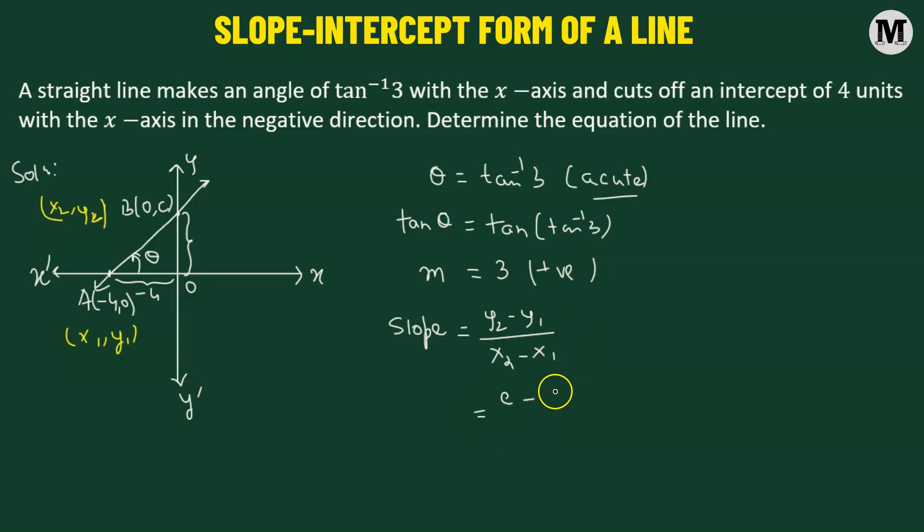We have C minus 0 divided by x2 minus x1, so that's going to be 0 minus negative 4. Or simply put, we have C over 4.